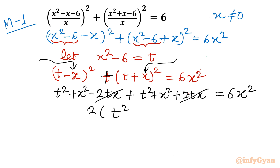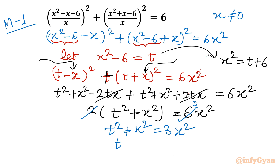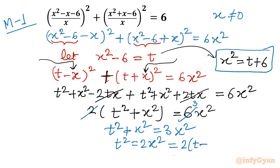So what is left is 2t² + x² = 6x². From this, t² = 2x² after taking away x² from both sides, which simplifies to t² = 2(t + 6), since x² = t + 6 from our substitution. This gives us one quadratic: t² - 2t - 12 = 0.